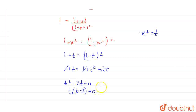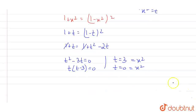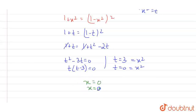So t has two values: t = 3, which means x² = 3, and t = 0, which means x² = 0. This gives us three values of x: x = 0 and x = ±√3.